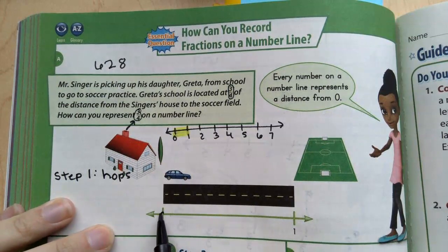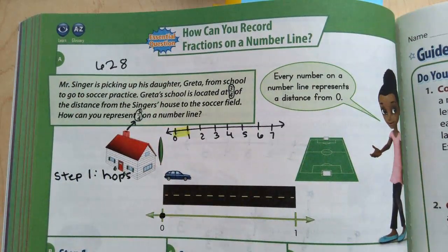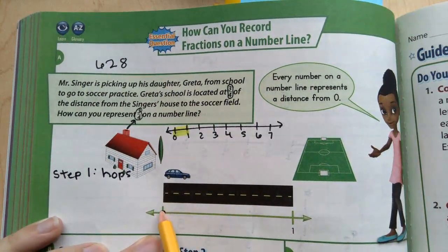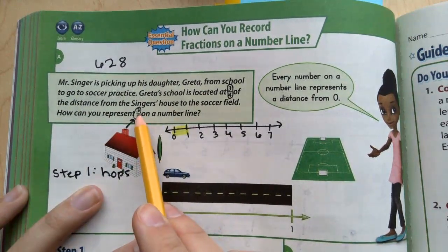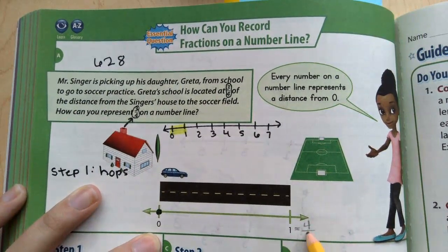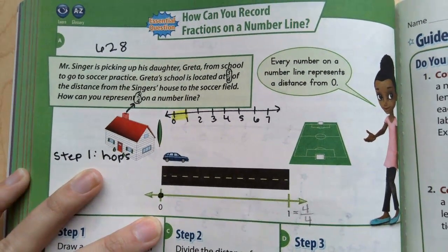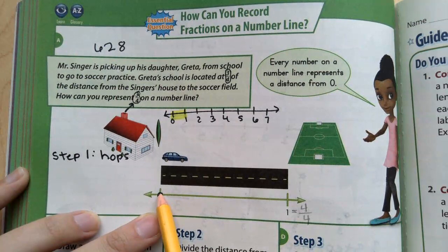I want you to start on 0. Make sure you have a pencil, because you may need to erase. Or you can do this on your ClassKick. Either one is fine. And we're going to make 4 hops, because our whole has 4. When we get to the end, we need 4 out of 4 hops. That is our whole. Remember, wholes have the same numerator and denominator.